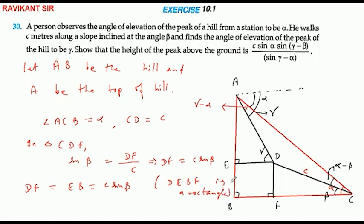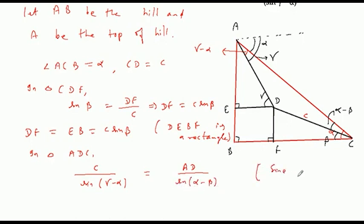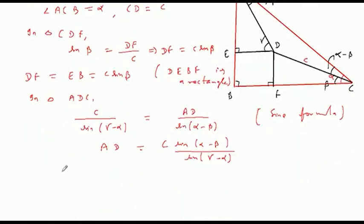अब position equal हो जाएगा। अब हमें AE find करना होगा। In triangle ADC में हम लोग sine formula use करने वाले हैं। हम लोग लिख सकते हैं: c/sin(gamma minus alpha) = AD/sin(alpha minus beta)। तो AD का value आ जाएगा: AD = c·sin(alpha minus beta)/sin(gamma minus alpha)।